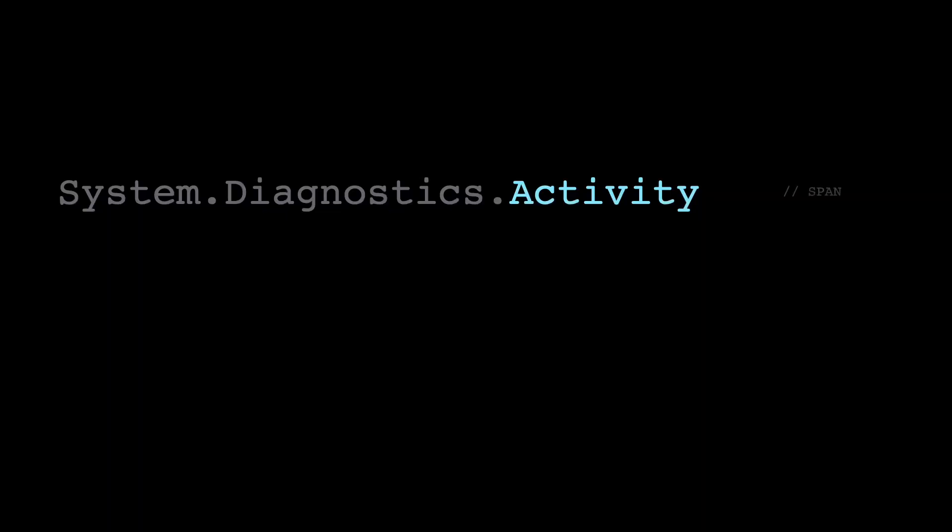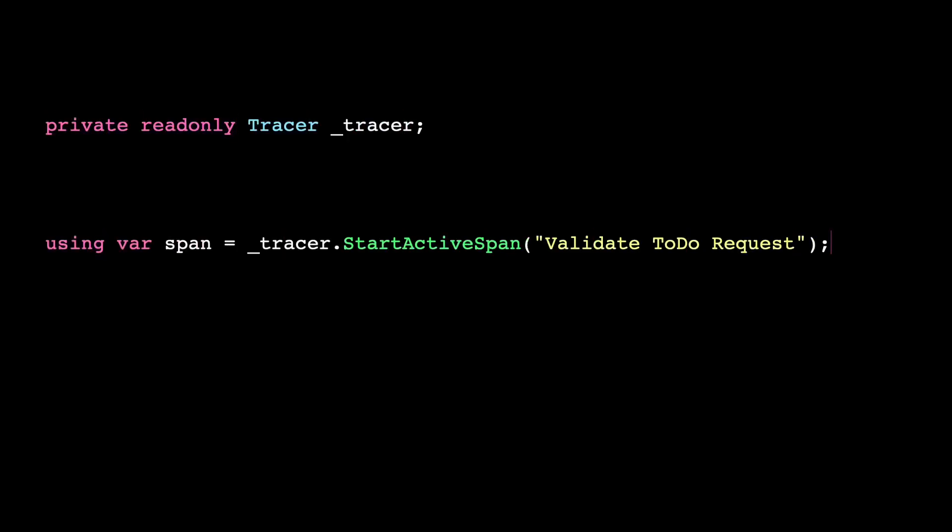Tip number one: avoid the shim. Tracing in .NET is built on top of the ActivitySource. That means that what you have is the term 'activities', but in OpenTelemetry we refer to those as traces and spans, and that's why there's a shim available — so if you want to use those OpenTelemetry terms, you can use them. However, if you don't have a good reason for that, don't do it.